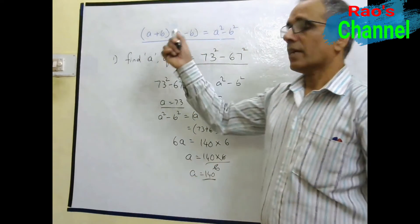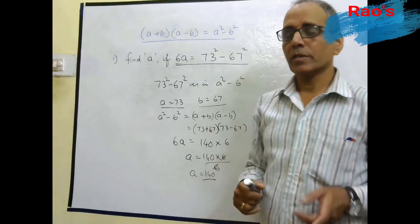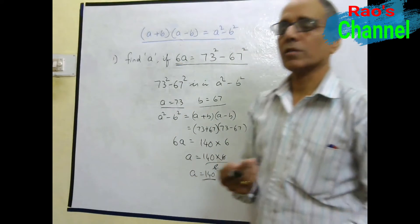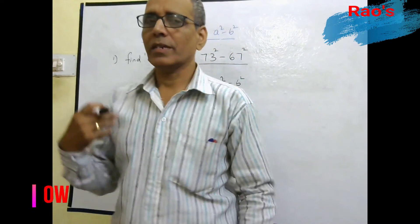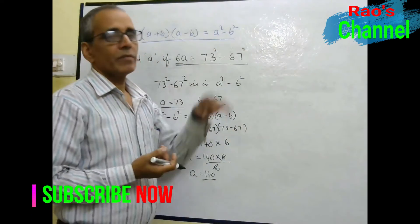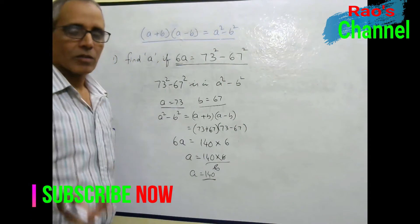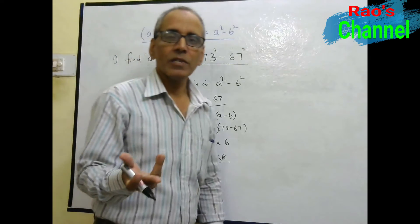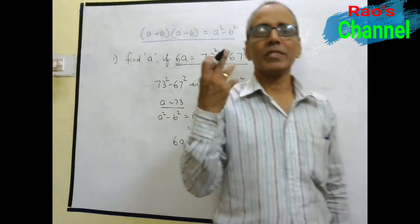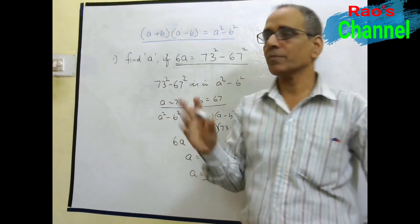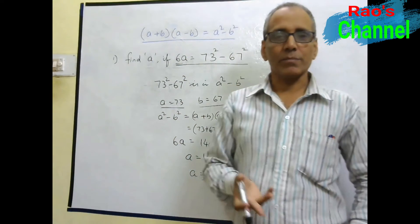Reading identity from both ways is important not only for this but for A plus B whole square also, because unless you read the identity from both ways you cannot factorize in the next concept. During factorization you must be able to read and identify the expression from both ways. That is very important.